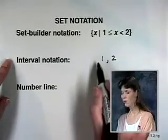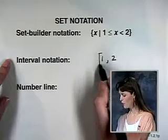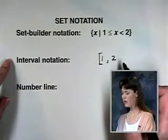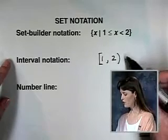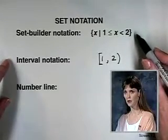Because the value of 1 is included, we're going to use a square bracket in front of it. Because the value of 2 is excluded, we'll use a set of parentheses. So this notation means exactly the same thing as the set notation does.